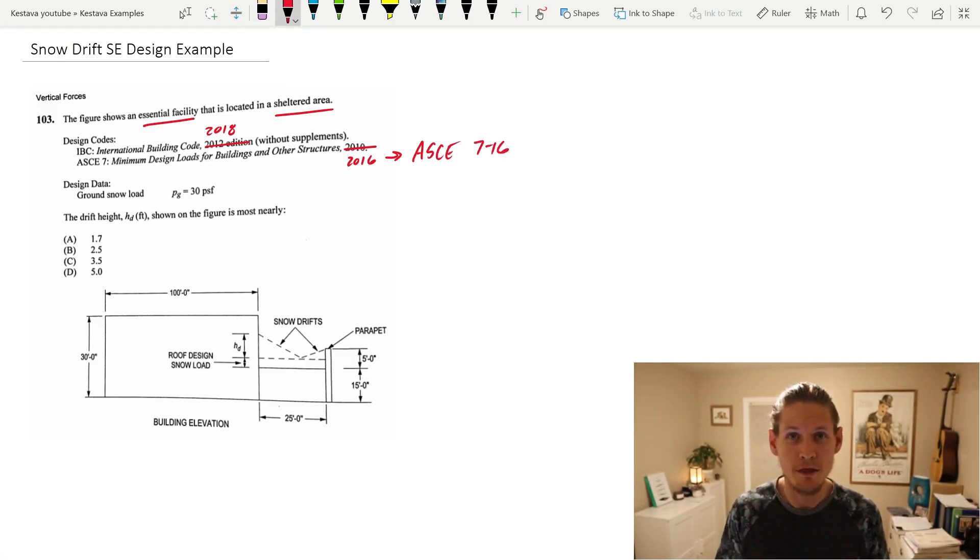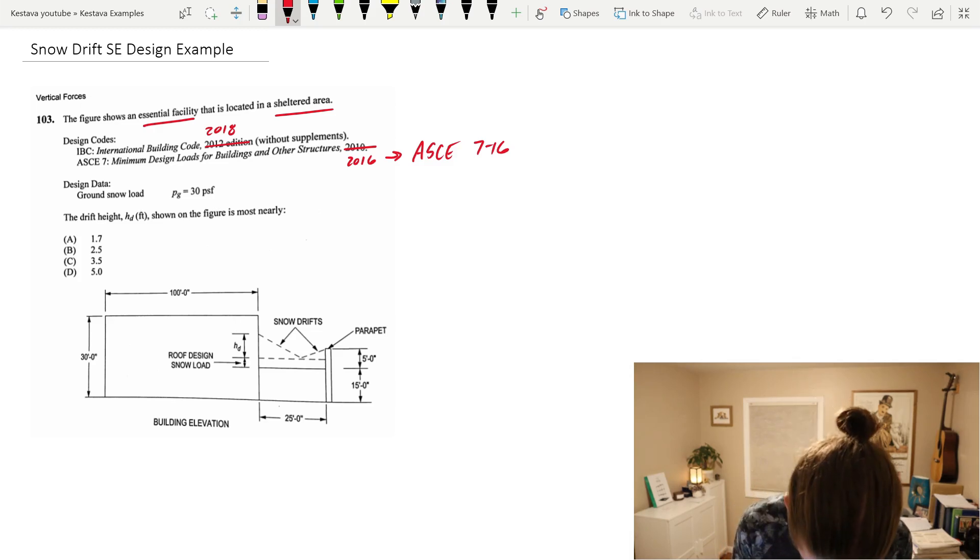Design data: ground snow load is 30 PSF, so P sub G. Now this problem does come directly from an SE practice exam that I was thumbing through and working on. But you can apply this directly to your PE and towards your overall progression as a design engineer in your field. So this is for everyone. Well, first off, we're going to be diving straight over into the ASCE 7-16 chapter one. Meet you in there.